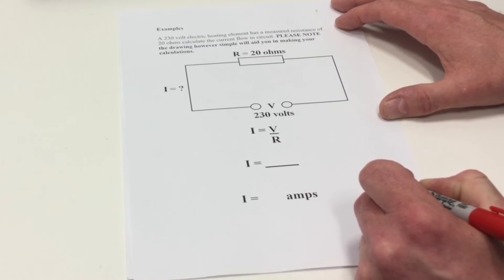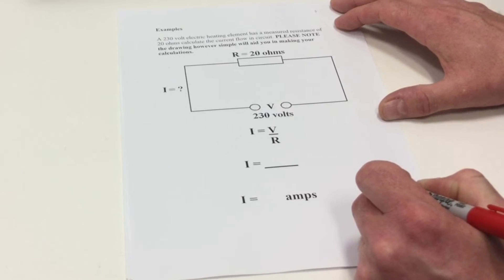Example number two, a 230 volt heating element has a resistance of 20 Ohms. What current will flow?